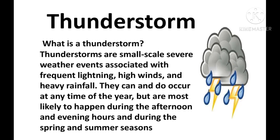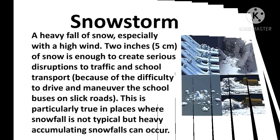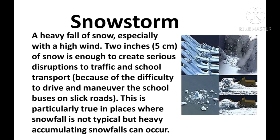Thunderstorms are small-scale severe weather events associated with frequent lightning, high winds, and heavy rainfall. They can occur at any time of the year but are most likely to happen during the afternoon and evening hours, and during the spring and summer seasons.